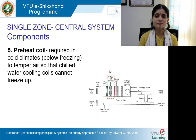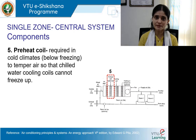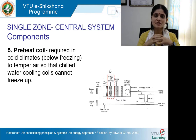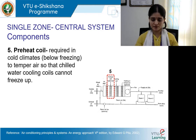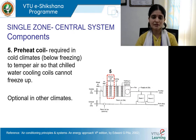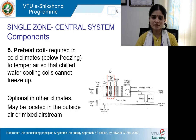Number five: the preheat coil. This is an essential requirement in colder climates — below freezing temperatures. It is used to temper the air so that the chilled water cooling coils do not freeze up. To avoid freezing of the cooling coils during extreme temperatures, we adopt the preheat coil. It is optional in other climates, not required in hotter climates, and may be located in the outside air or mixed air stream.